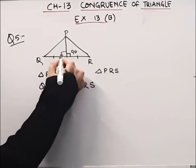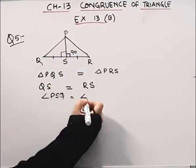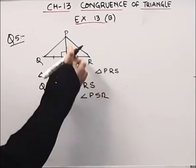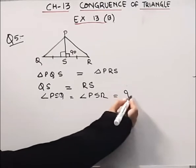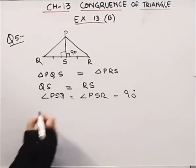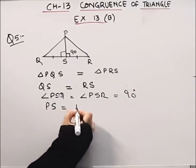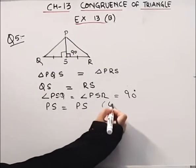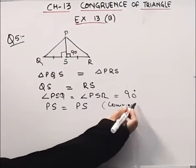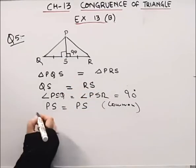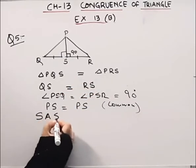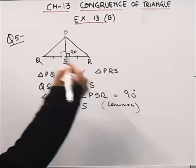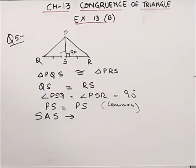We have angle PSQ equal to 90 degrees because PS is the altitude. So angle PSR is also 90 degrees — both angles are equal. Then PS is equal to PS, which is the common side. So by side, angle, side — SAS — these two triangles PQS and PRS are proved congruent.